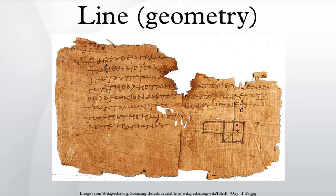With respect to triangles we have the Euler line and the Simpson lines. For a hexagon with vertices lying on a conic we have the Pascal line, and in the special case where the conic is a pair of lines, we have the Pappus line. Parallel lines are lines in the same plane that never cross. Intersecting lines share a single point in common. Coincidental lines coincide with each other — every point that is on either one of them is also on the other. In three-dimensional space, skew lines are lines that are not in the same plane and thus do not intersect each other.